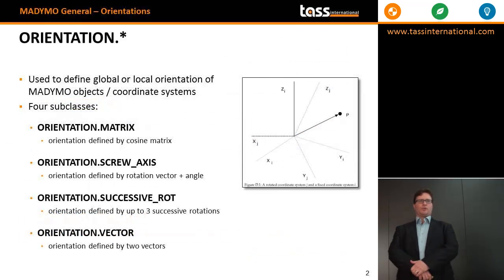In order to orient Madimob objects and coordinate systems, Madimob provides four keywords to position your objects. These keywords are the orientation.matrix, screw axis, successive rotations, and vector.